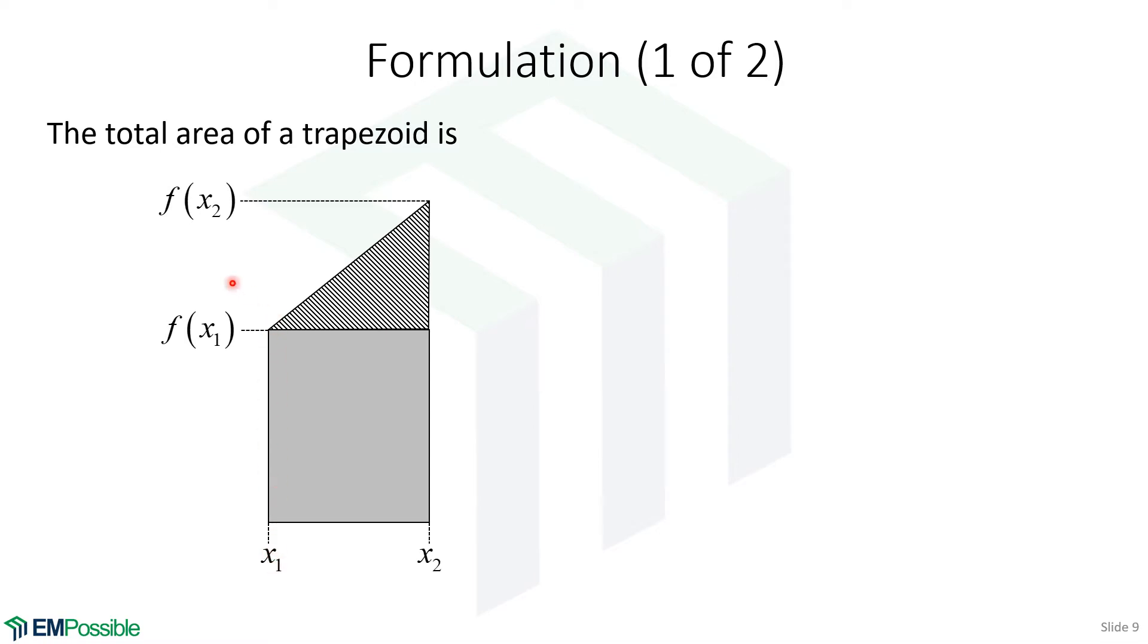So our function value at our first point, x1, we'll write as f of x1. And then at our second point, x2, we will write our function value as f of x2. Now, this trapezoid we can think of as two regions: a rectangle, and then on top of that, a triangle. So the total area is the sum of both of those areas. First, we'll look at the triangle region. The area of a triangle is one-half base times height. So the base is x2 minus x1. The height is f at x2 minus f at x1, which we're just writing as f sub 2 minus f sub 1. One-half base times height gives us the area of the triangle.